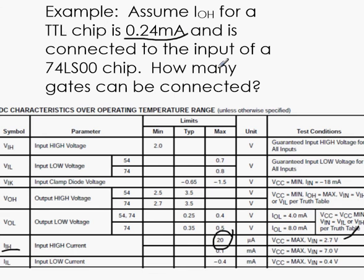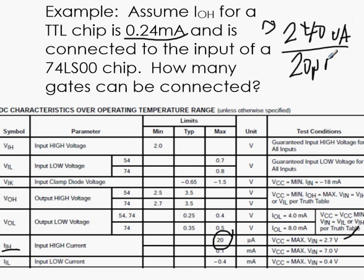So that means our number that we would look for would be 20 microamps. Remember, this is the maximum number of source. So if I convert that to micro, that will be 240 microamps. Now each gate will use 20 microamps of current. So if we take 240 divided by 20, we'll get 12.